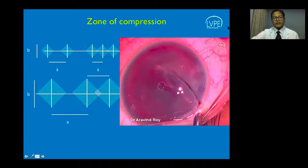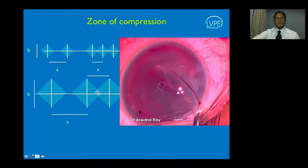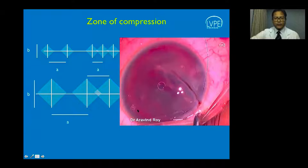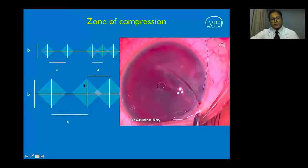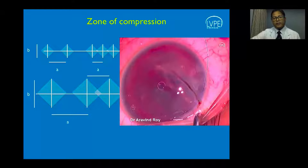An important concept in corneal tear repair is understanding zones of compression. When you place a suture on the cornea, each suture creates a zone of compression that is square-shaped, with a diameter equal to the length of the suture. With large numbers of smaller sutures, you have smaller zones of compression and need more sutures to close the same wound. With longer bites, there are larger zones of compression and fewer sutures are needed to close the same incision.